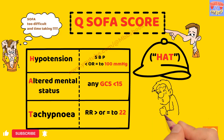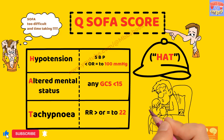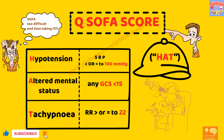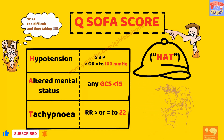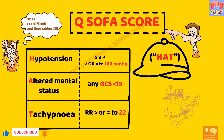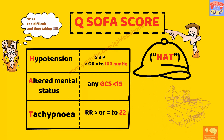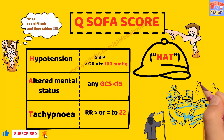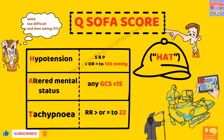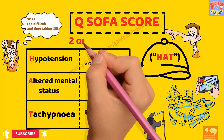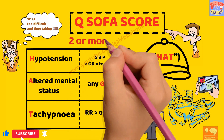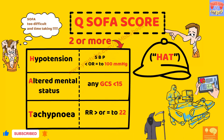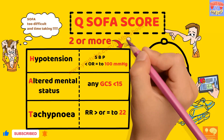It is important because patients with suspected infection who are likely to have a prolonged ICU stay or to die in the hospital can be promptly identified at the bedside with the qSOFA score. A score of 2 or more of the qSOFA parameters will give an alarm.